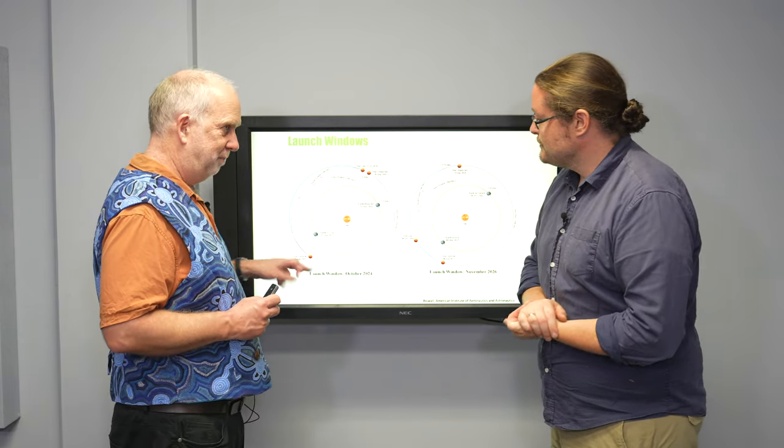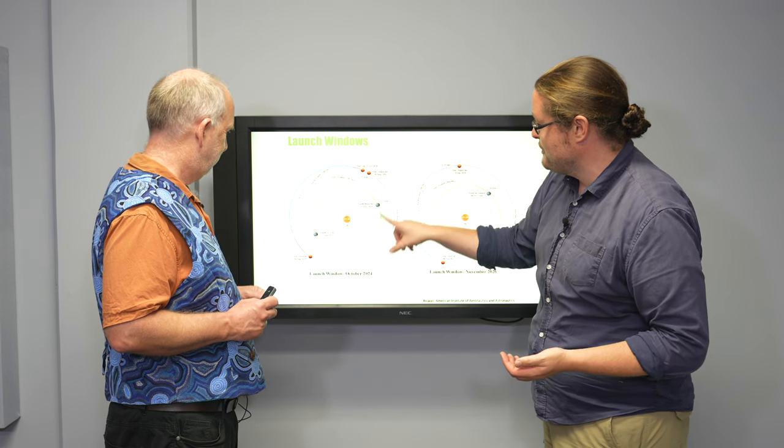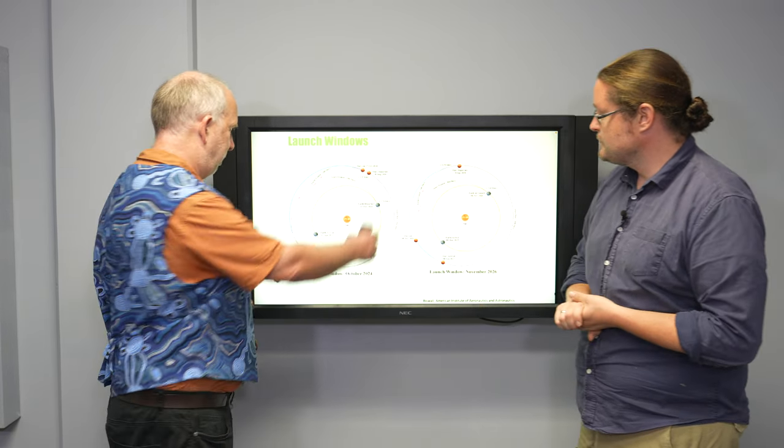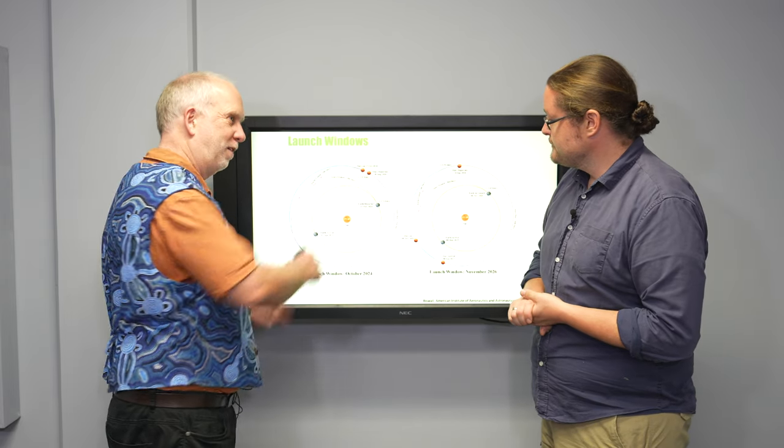But then when you get there, Earth is over here, right? Earth has already started to move. Yeah. Earth would probably have gone all the way around. That's right. Yeah. So Earth would be back over there by that point. Exactly.